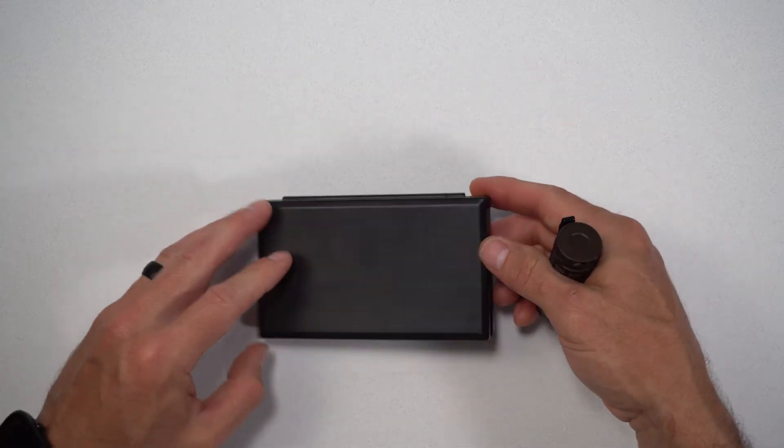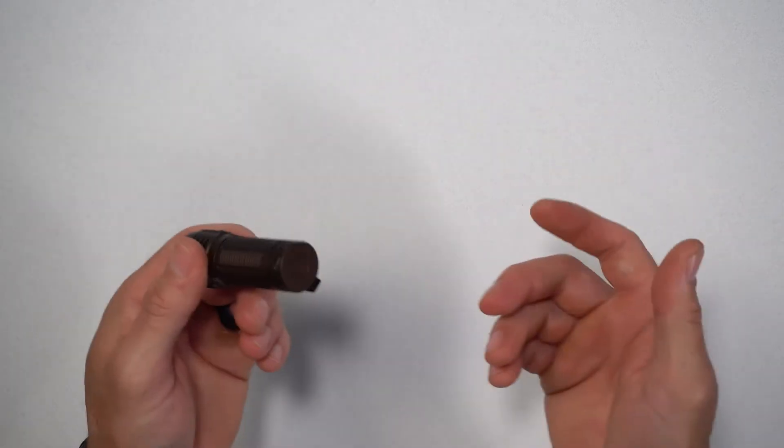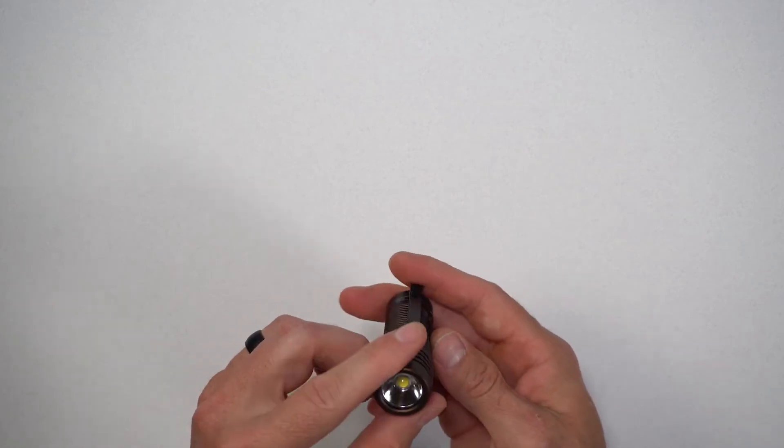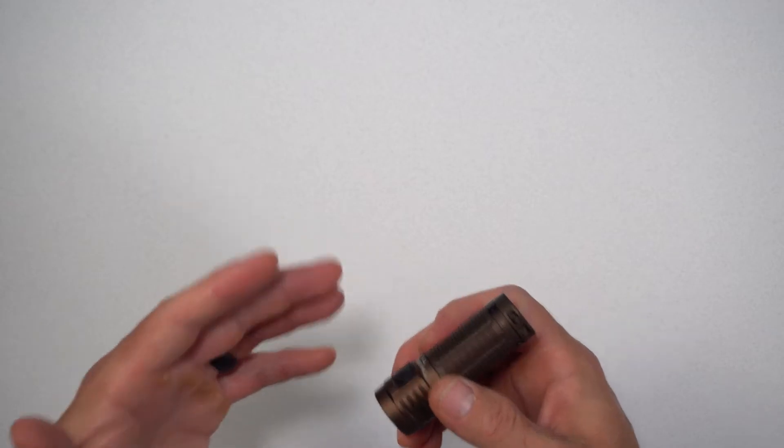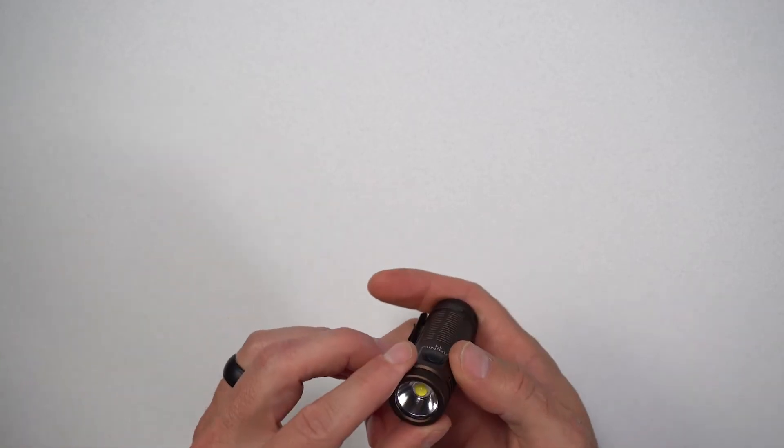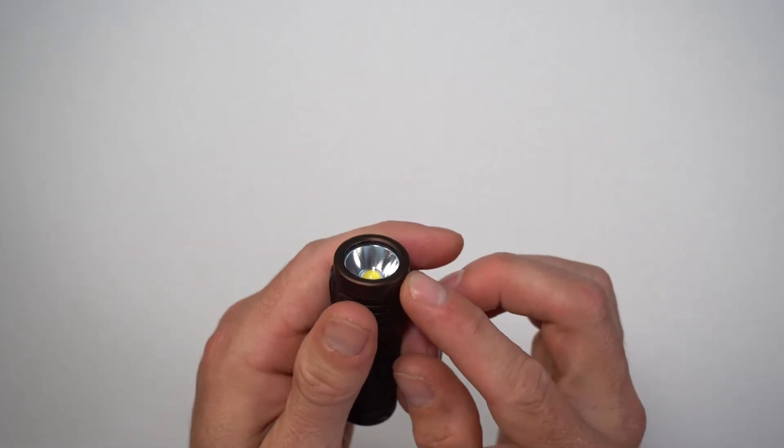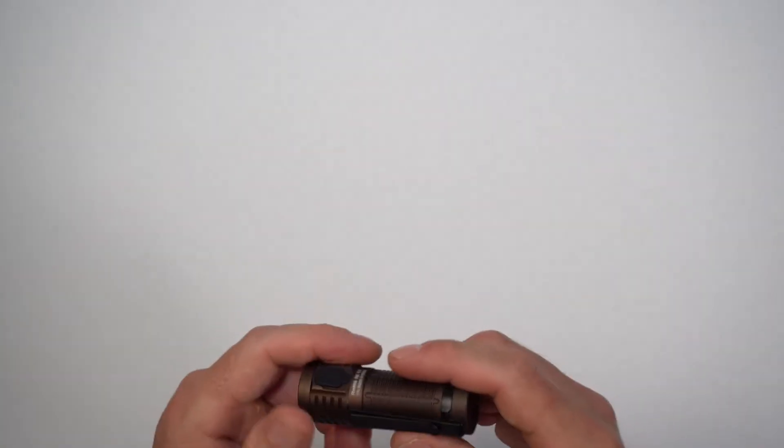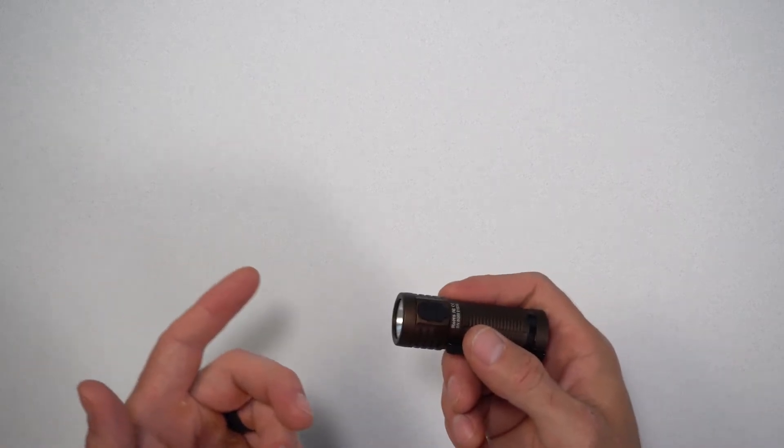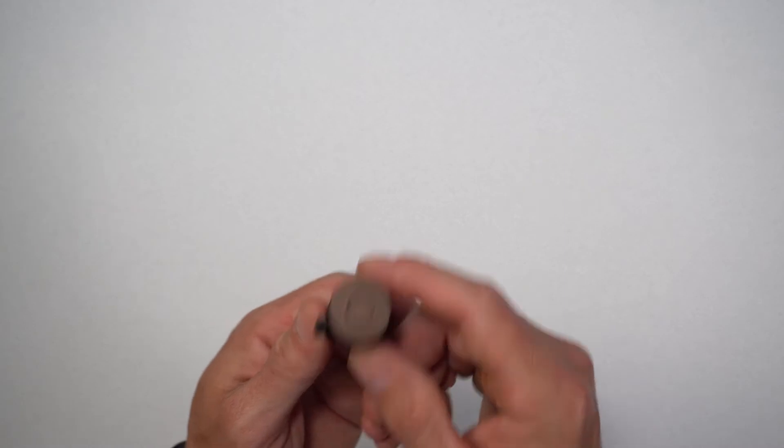It's a standard IPX8 waterproofing, two meters for 30 minutes, 1.5 meter impact resistance. The beam distance is reported to be 335 feet or 102 meters, which is a little short compared to some of the other flashlights, and that's due to this shallow reflector. It's a very floody light, which I do like. I think it's great for EDC. The beam intensity is 2,600 candelas, and it's made in China.